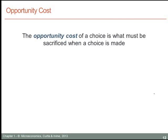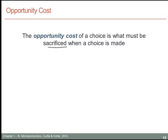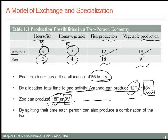Before we formalize our model, we need to define what we mean by opportunity cost. The opportunity cost of a choice is what must be sacrificed when that choice is made — the cost of making a choice is what you cannot do as a result. So, what is Zoe's opportunity cost of vegetables for fish and vice versa? Zoe is capable of producing twice as many units of fish as she is vegetables. Going back to the numerical example: Zoe can produce 18 units of fish or 9 units of vegetable.